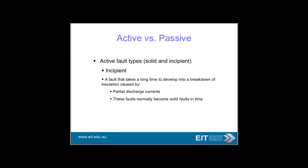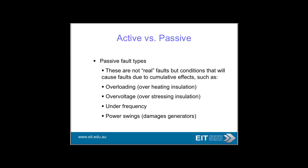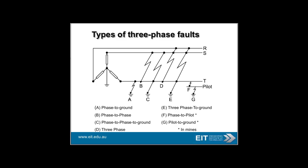An incipient fault is something which is building up — partial discharge currents — and eventually develops into a solid fault. Passive faults are still faults but not considered real faults in the same sense: overheating of insulation, overvoltage, underfrequency, and power swings, which could damage the mechanical components of the generator especially.